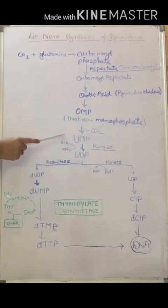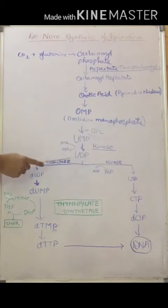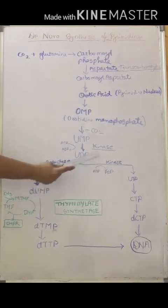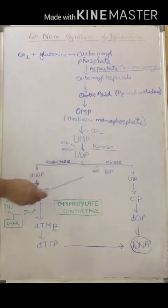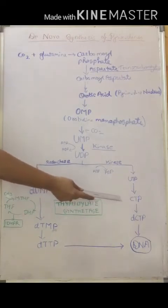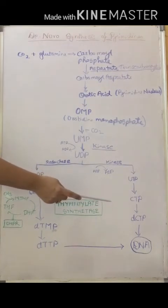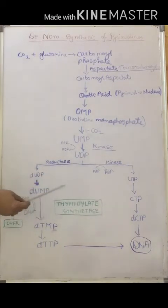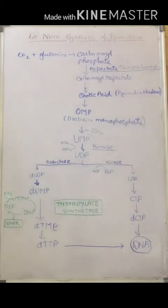Uridine monophosphate, in the presence of the enzyme kinase, is converted to UDP (uridine diphosphate), which undergoes another kinase reaction to form UTP (uridine triphosphate). UTP is further converted to cytidine triphosphate (CTP), which gets reduced to deoxycytidine triphosphate — which is then incorporated into DNA.